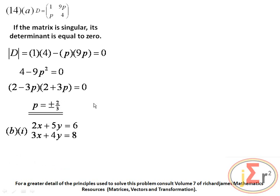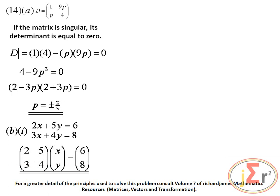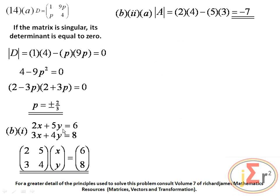We have a system of linear equations to write in matrix form. The coefficients of x and y go in a 2×2 matrix, x and y in a vertical column matrix, and the constants in a column matrix. Following the instruction rather than jumping to a solution, we calculate the determinant of A: 2 times 4 minus 3 times 5 equals 8 minus 15 equals negative 7.